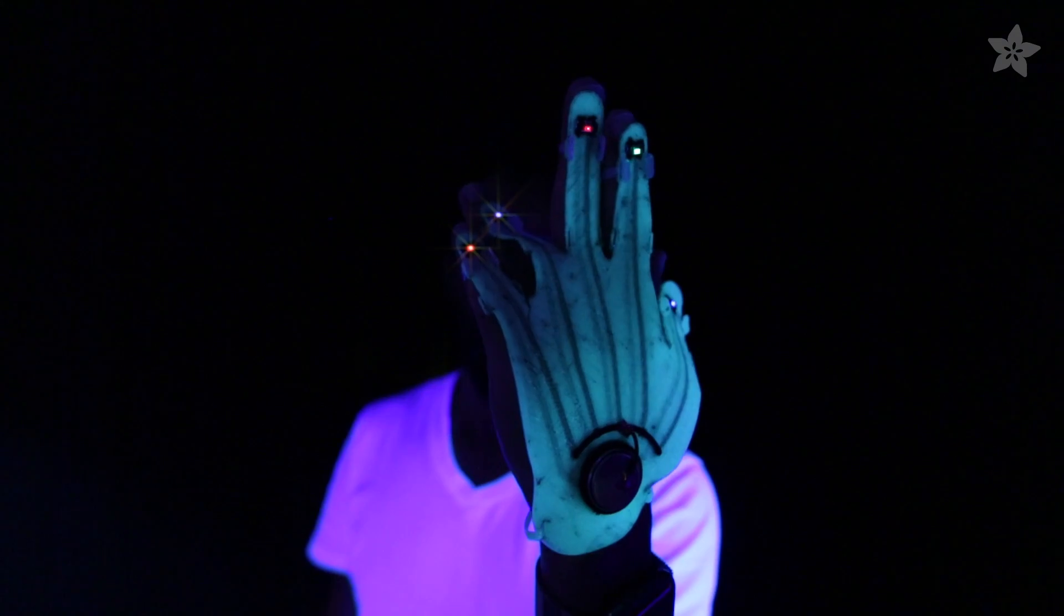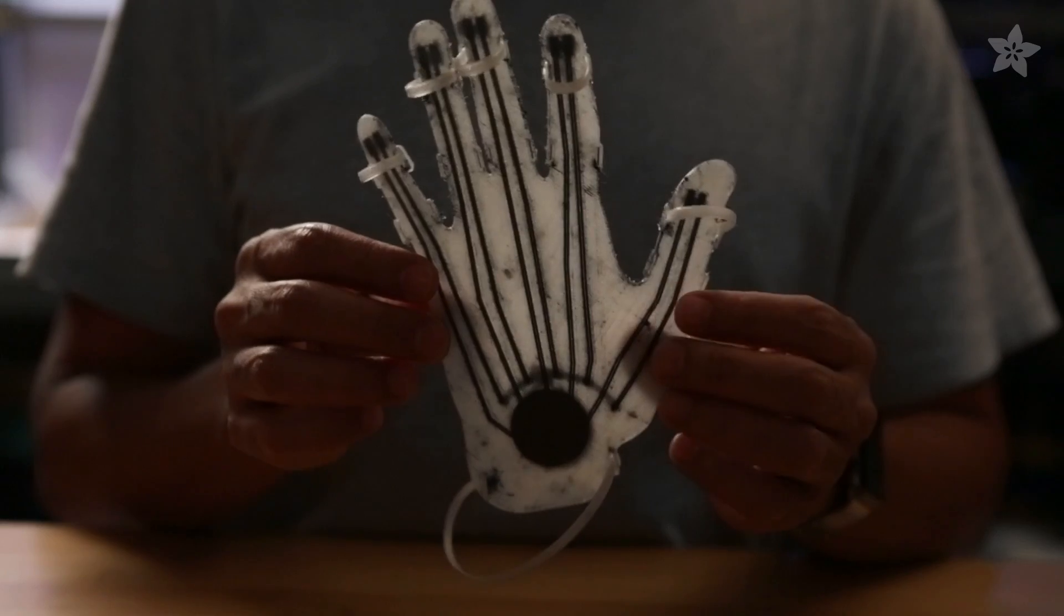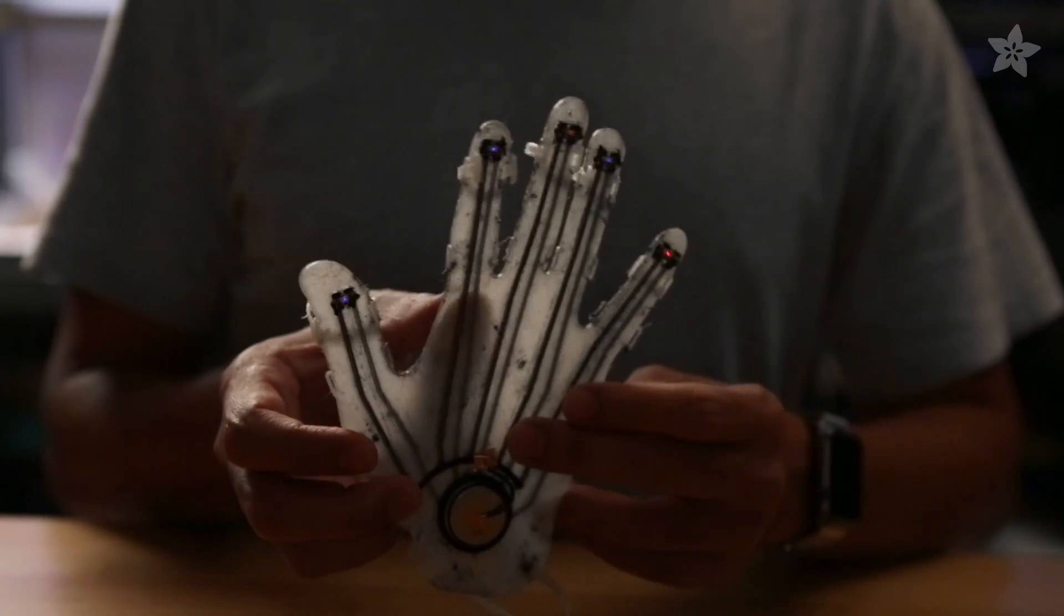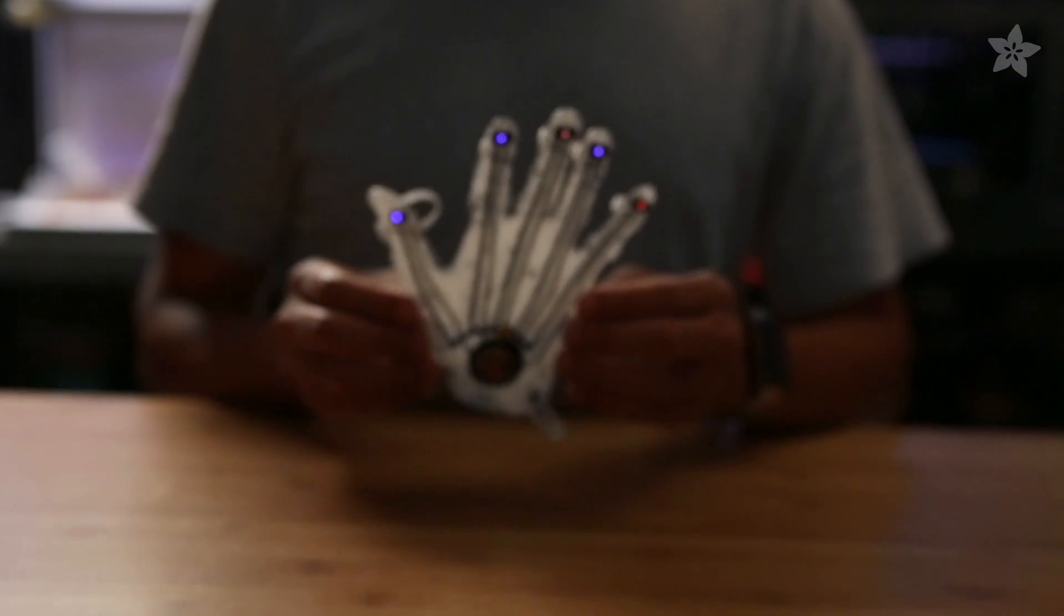This project will show you how to use NinjaFlex and conductive filament to make a sci-fi inspired wearable. This integrated circuit is semi-flexible and uses a coin cell battery to power five very bright LED sequins.